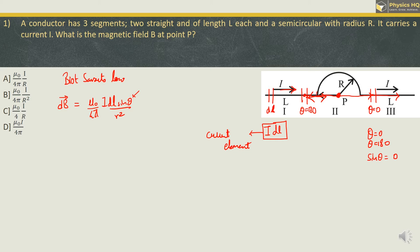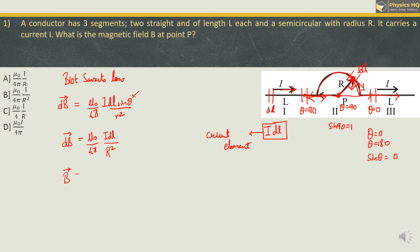We will have magnetic field only because of the second segment, which is along the circular path. Consider a small element dl on the semicircle. The direction of the current will be tangent to the semicircle, and the position vector from point P to this element will be radial. The angle between these two is 90 degrees, and sin 90 equals 1. So we get mu0 upon 4pi times I dl divided by R square. Integrating over the entire semicircle gives mu0 upon 4pi times I by R square, multiplied by the integral of dl.